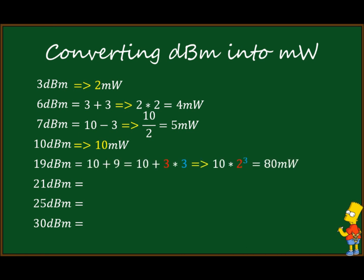For 19 dBm: 19 = 10 + 9, and 9 = 3 + 3 + 3, so it becomes 10 × 2 × 2 × 2, or more concisely 10 + 3×3 converts to 10 × 2³. Be careful — only the base is converted, not the exponent. All in all, that's 80 milliwatts.